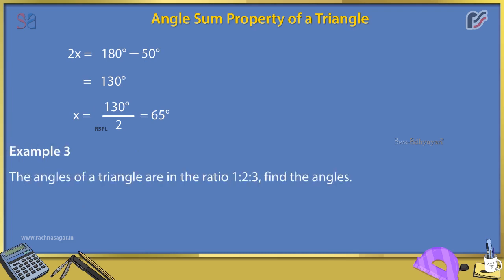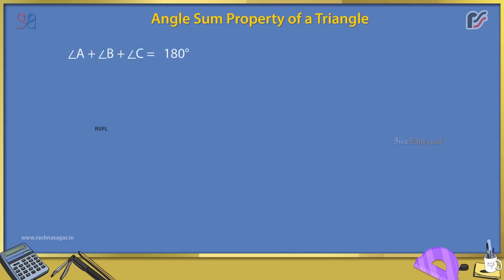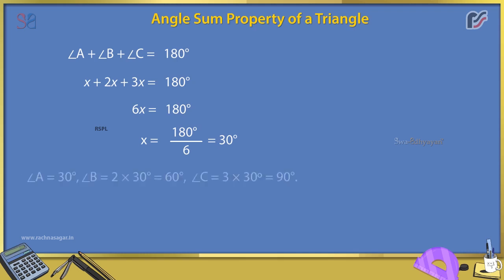Example 3: The angles of a triangle are in the ratio 1:2:3. Find the angles. Solution: Let angle A = x, angle B = 2x, angle C = 3x. Then x + 2x + 3x = 180°, so 6x = 180°, giving x = 30°. Therefore, angle A = 30°, angle B = 60°, angle C = 90°.